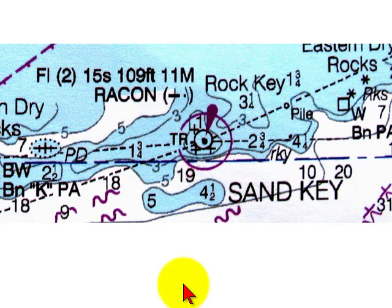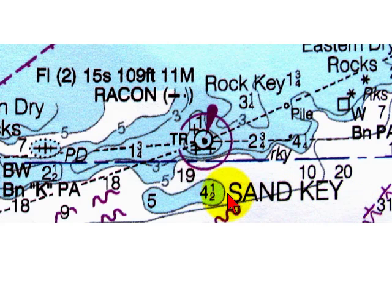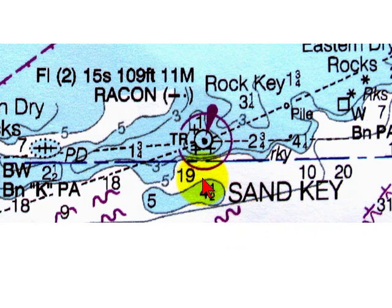Let's take a look at a small section of a chart just off of Key West, Florida. The name of this light is called Sankey. The name of a light is always in all capitals, and you can see the name of the light Sankey in capital letters. Light structures show a symbol of a dot, which is the exact position of the light, along with a teardrop shape somewhere over the dot. You can see the abbreviation TR next to the light, which means tower.